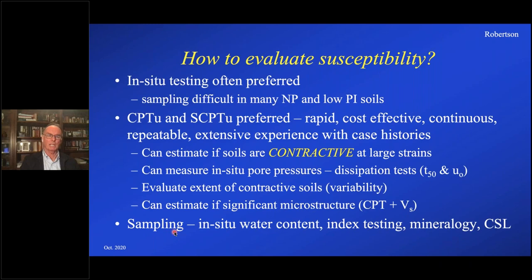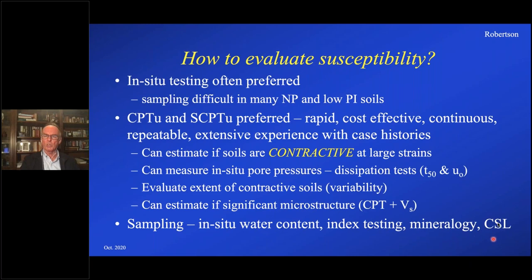You get literally thousands of data points, so you can run statistical evaluation on the variability. You can also estimate whether or not there's any microstructure such as aging or cementation by combining the shear wave velocity with the CPT — I'm sure many of you have read the 2016 paper where I discussed that. Then follow it up with selective sampling in the critical layers. For fine-grained tailings that are essentially clay-like, it's important to take lots of in-situ water contents, because if you have a saturated clay-like tailings, in-situ water contents become a very valuable way of estimating the in-situ void ratio. Then run index testing to determine how variable the material is and how plastic it is, and also investigate the mineralogy to determine whether it may be affecting the CPT interpretation.